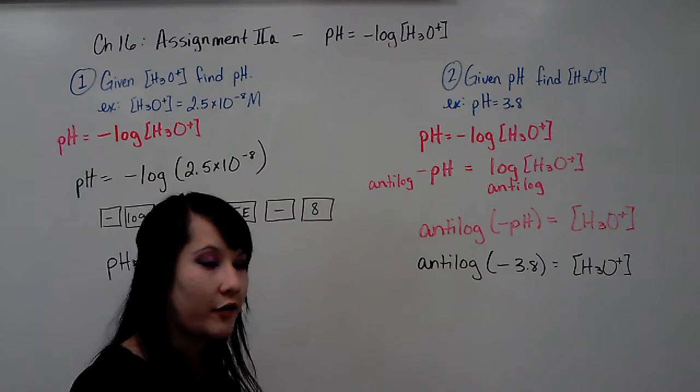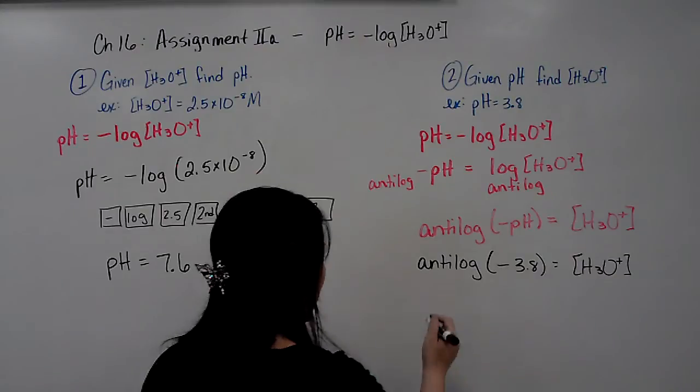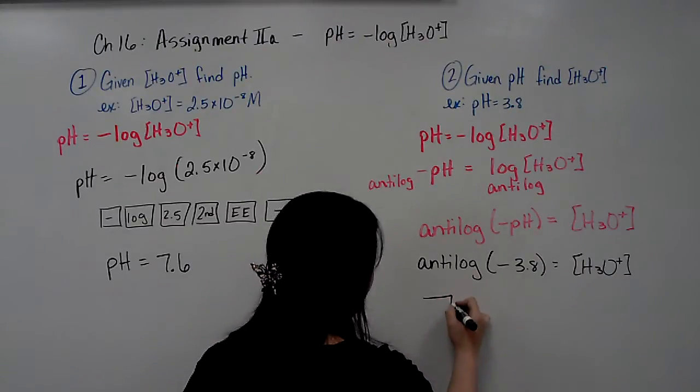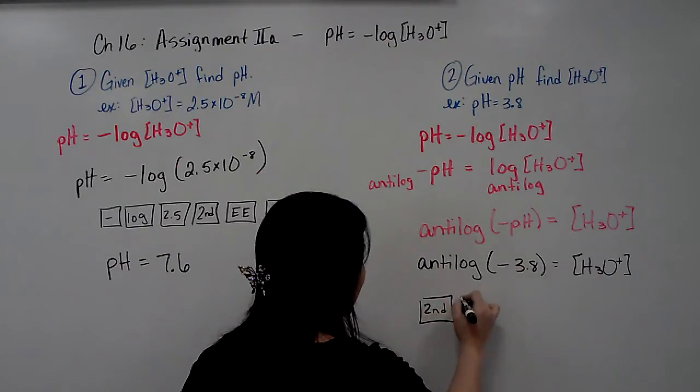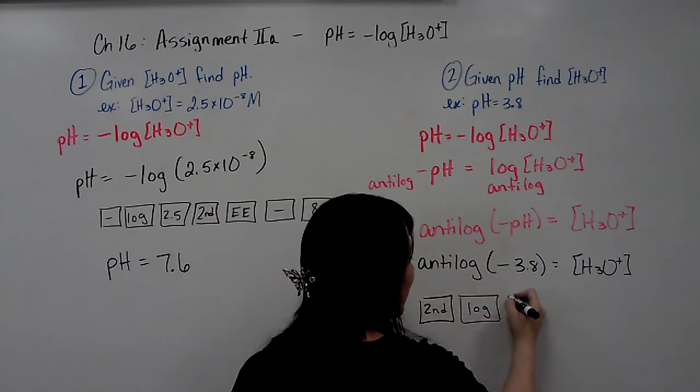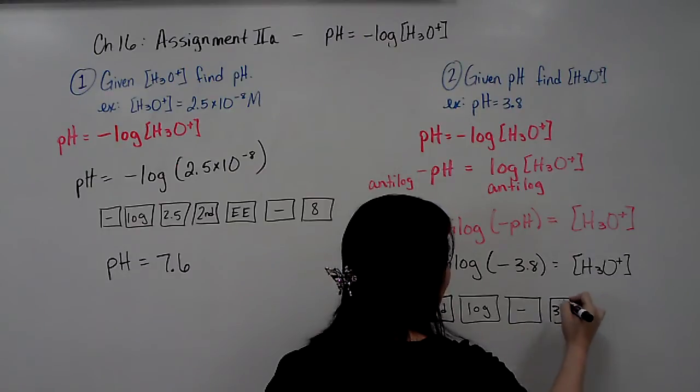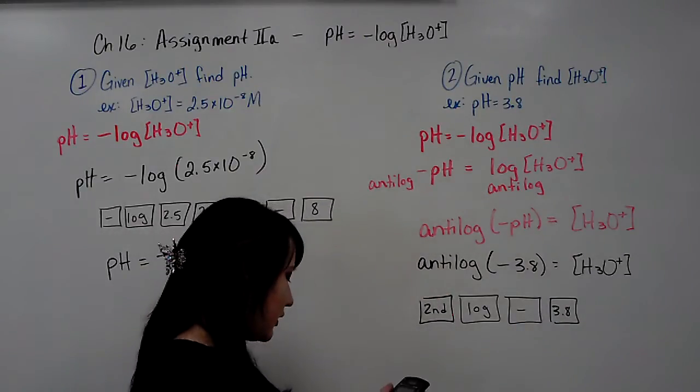And exactly how do you solve this in your calculator? And I'm going to tell you each button that you're going to want to press. You're going to hit second log, which is going to be the anti-log, and then negative 3.8. So let's go ahead and do that now.